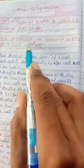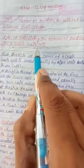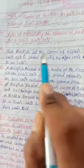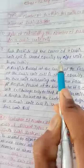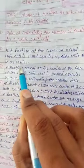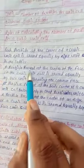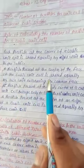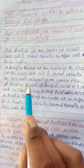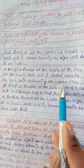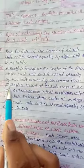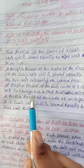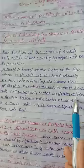Rules for calculating the number of particles in a cubic unit cell. First point: each particle at the corner of a cubic unit cell is shared equally by eight unit cells in the lattice. Second point: a particle present at the center of the face of the cubic unit cell is shared equally by two unit cells having the common face. Third point: a particle present at the body center of a cubic unit cell belongs only to that particular unit cell.